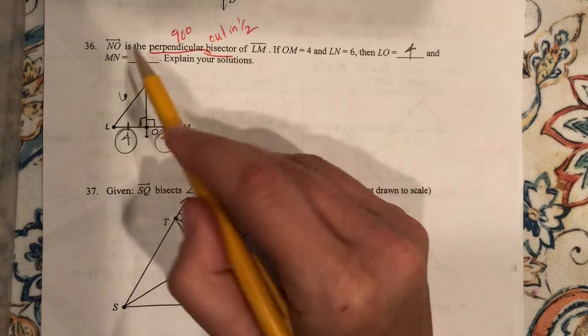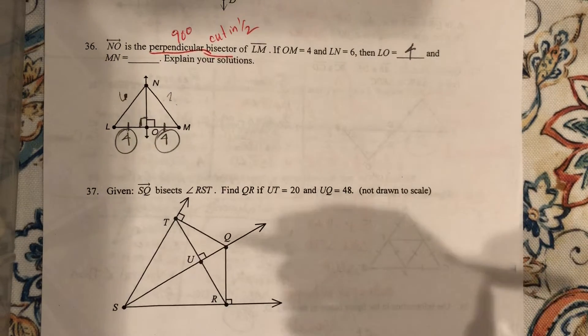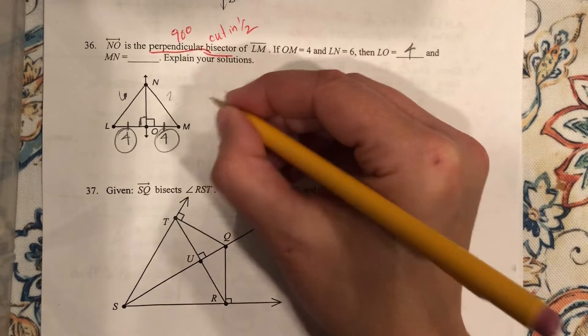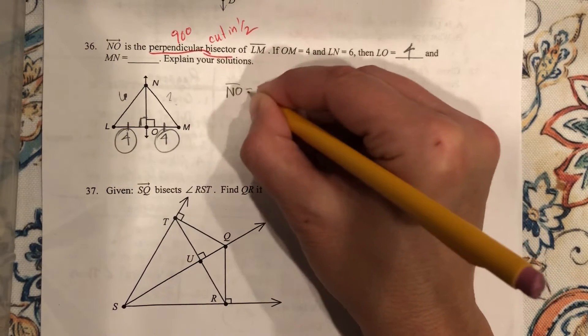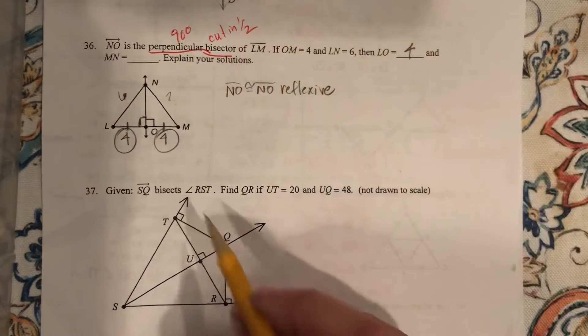Because it's the same as this one. MN, what is this? Well, I can't just say it's 6 by looking at it. But what can I say? I know that NO is congruent to NO by the reflexive property.